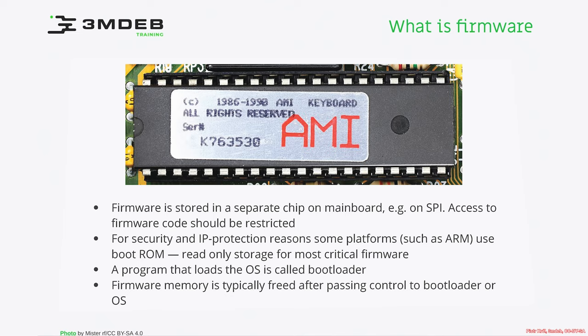The other side is where and how firmware is stored, and this is how it differs from other software. Typically firmware is stored in a separate chip on the main board, typically an SPI chip, and access to firmware code is restricted and limited — so an attacker who wants to make a persistent threat on the platform will not get easy access to this storage or be able to modify it. For security and intellectual property protection reasons, some platforms use built-in firmware inside the processor. We call it boot ROM — a read-only storage internal to the SoC — which executes the most critical firmware and then passes control to further boot stages.